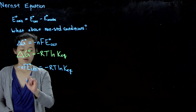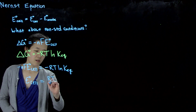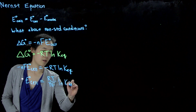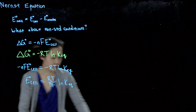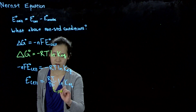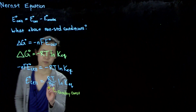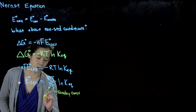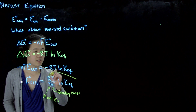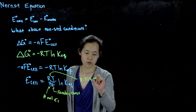From that, we can express E°_cell in terms of RT over NF times log of the equilibrium constant K. Some notes: K is the equilibrium constant, F is Faraday's constant, N is the number of moles of electrons, and R is the gas constant, 8.314 joules per mole Kelvin.